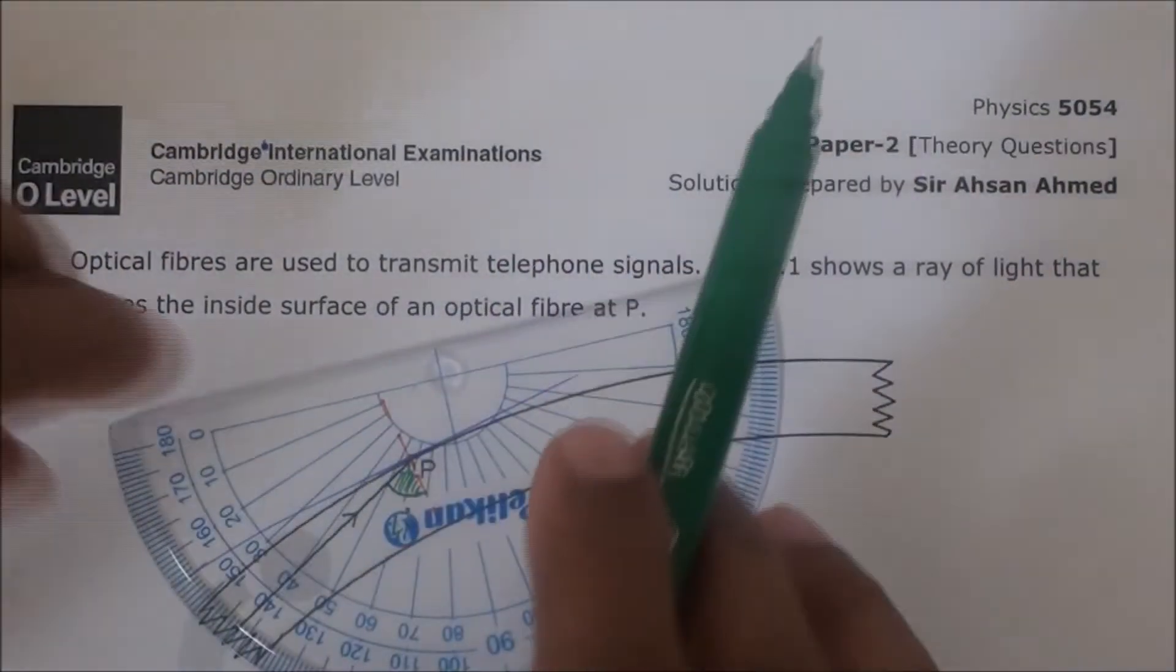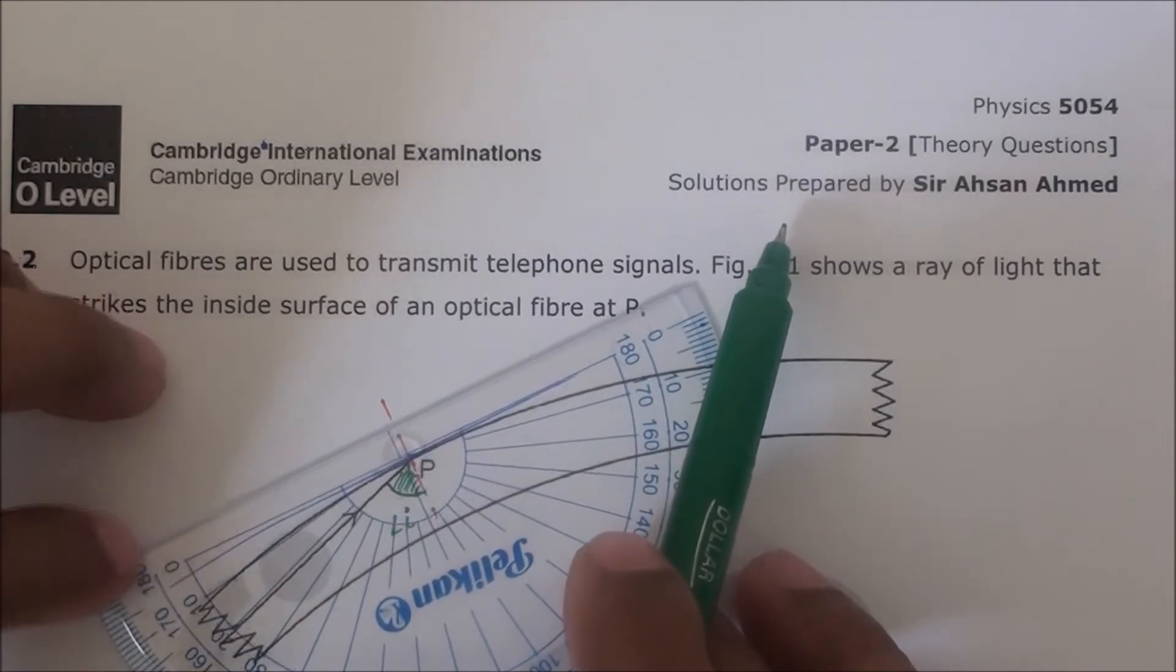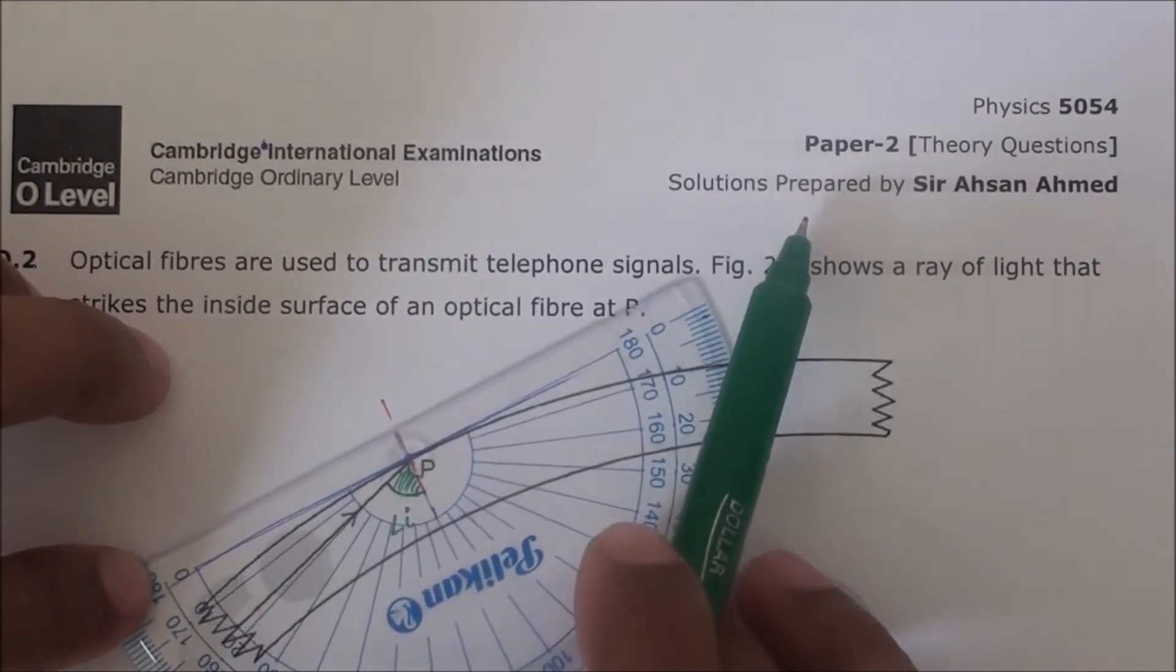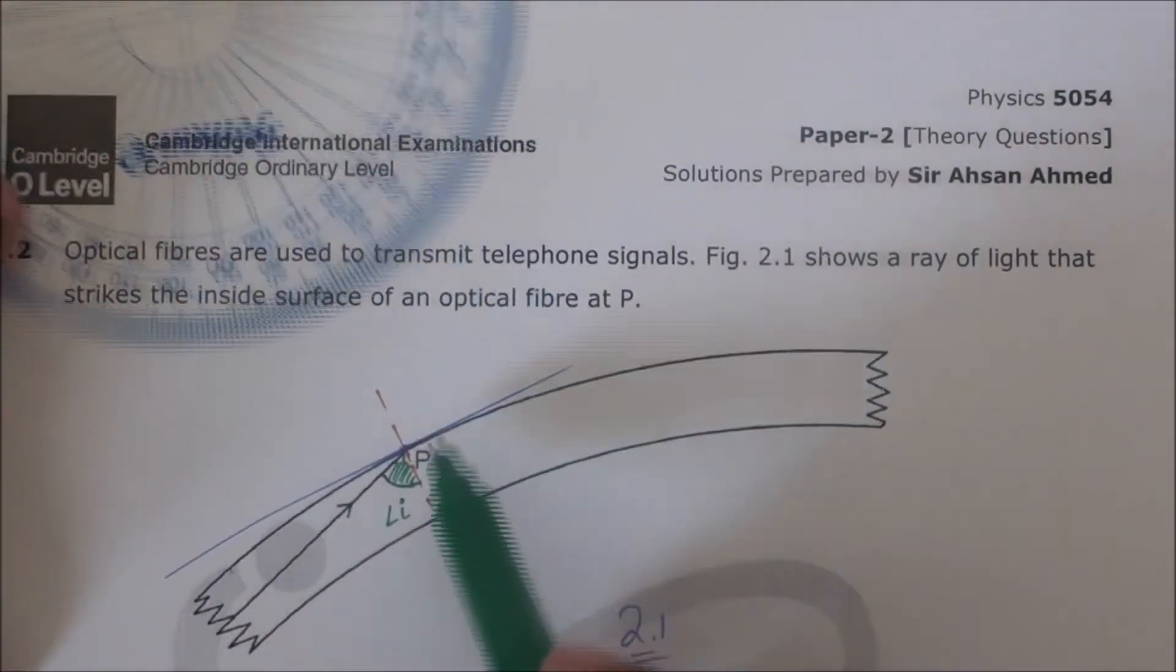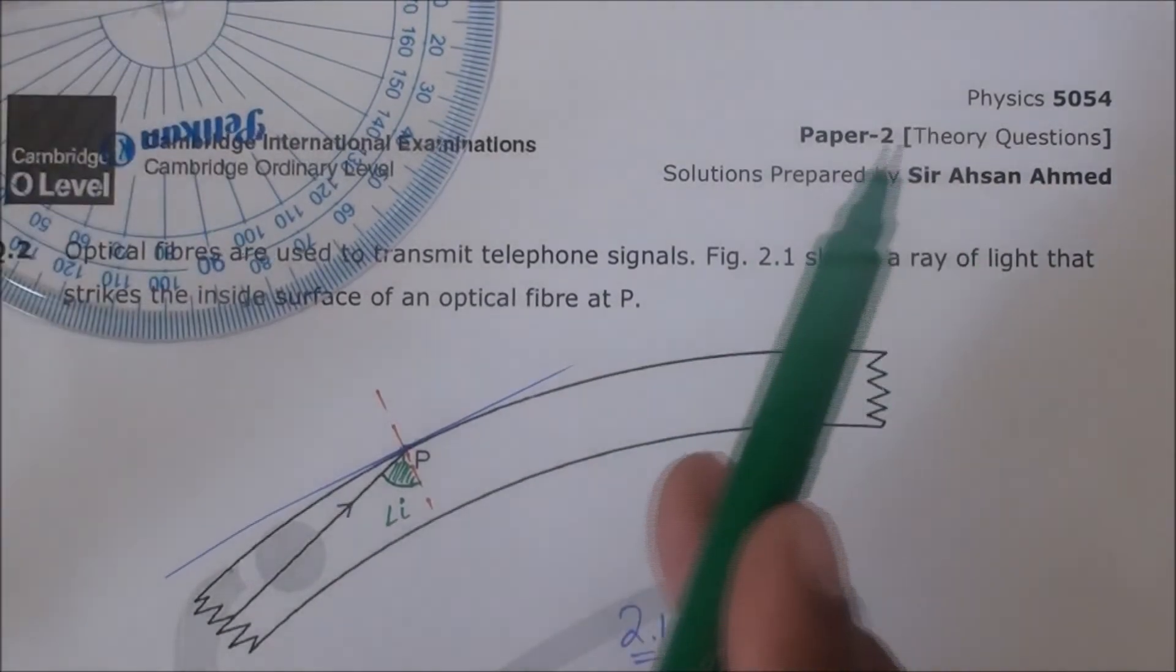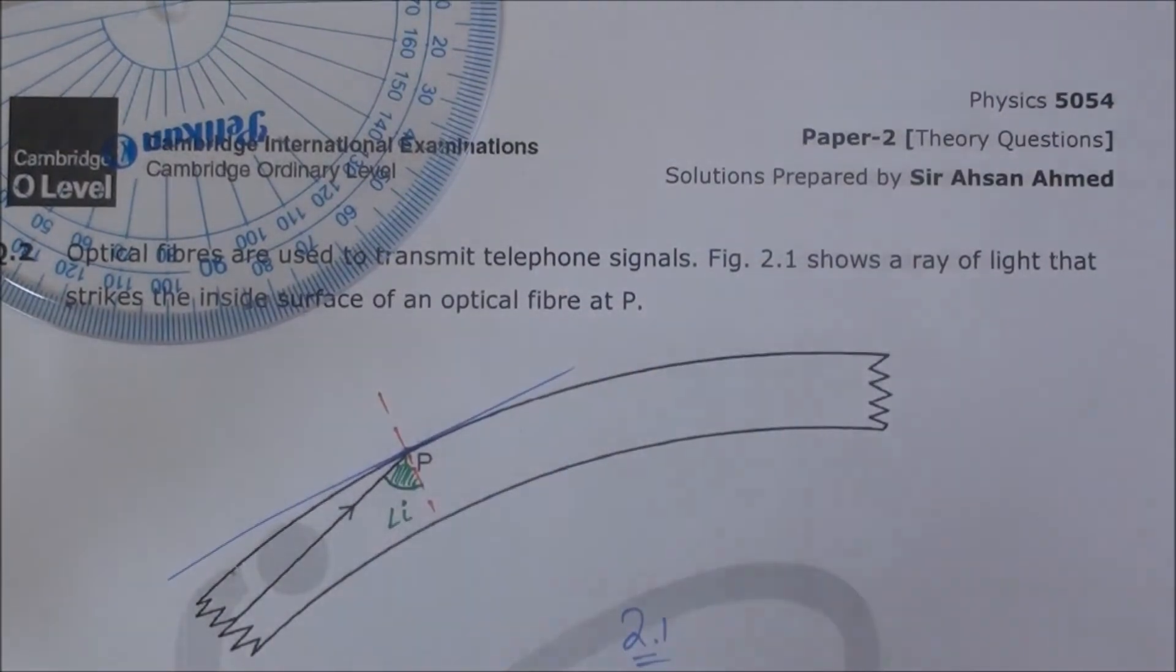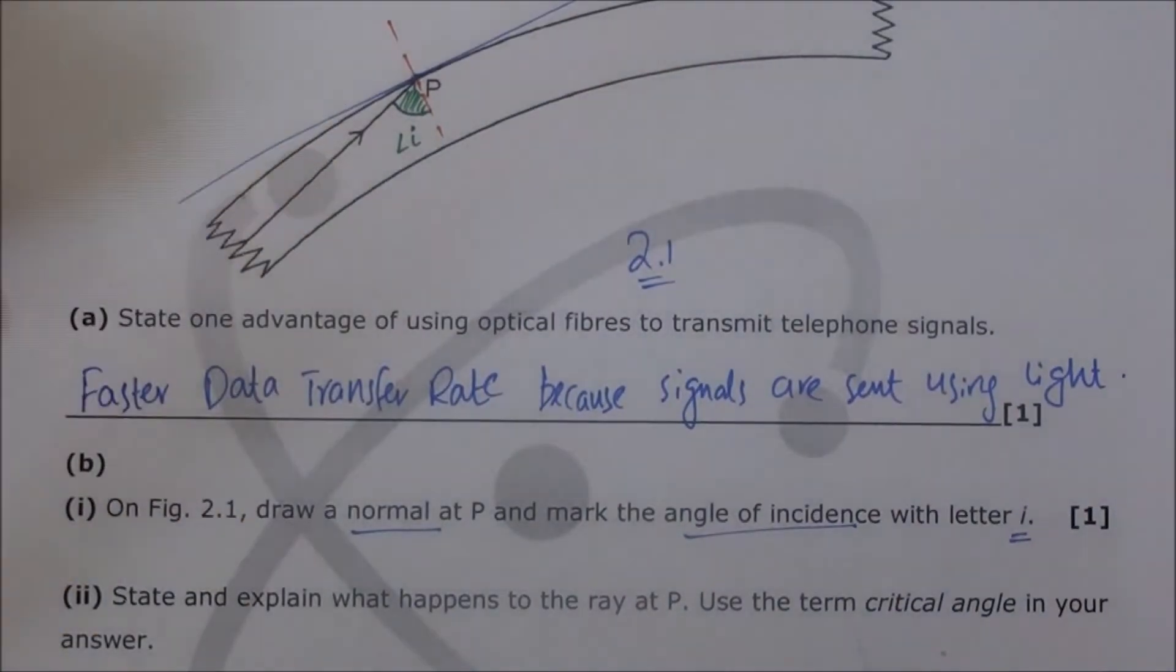They haven't asked to even find out what is the angle of incidence, which we can by the way, just by putting a protractor. We can find this angle which I have marked as the angle of incidence, and then we can find what would happen to this ray. But here they haven't asked, so we won't draw anything after this.